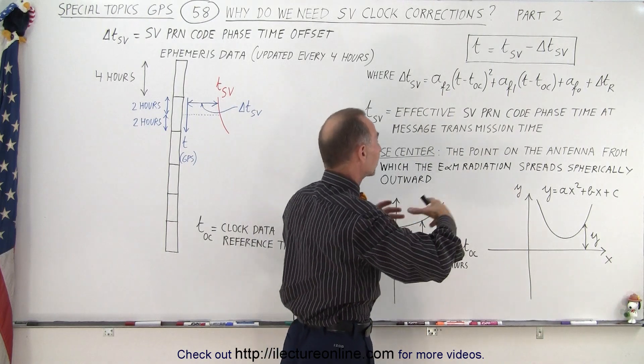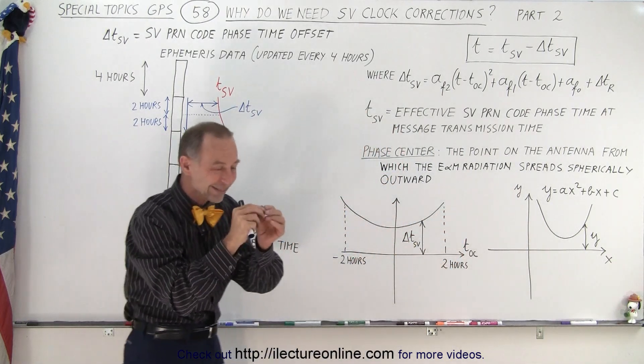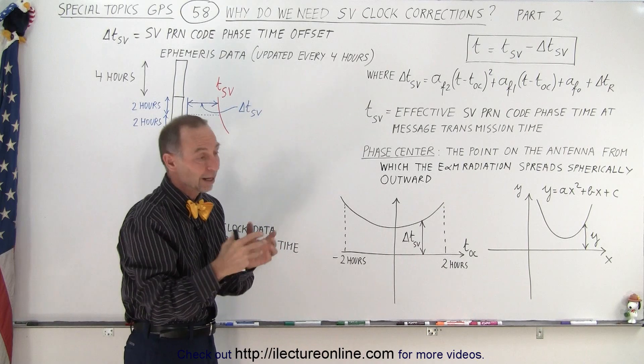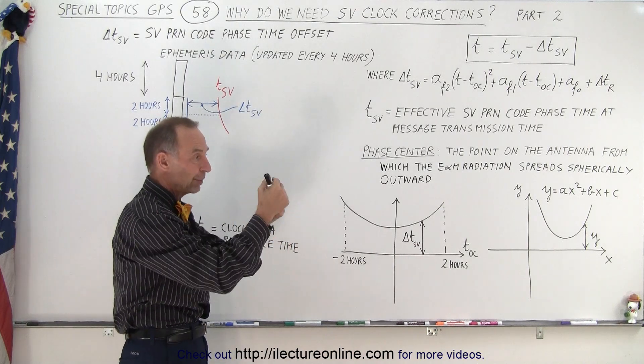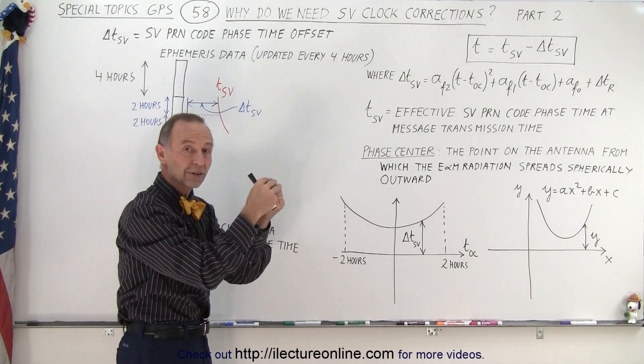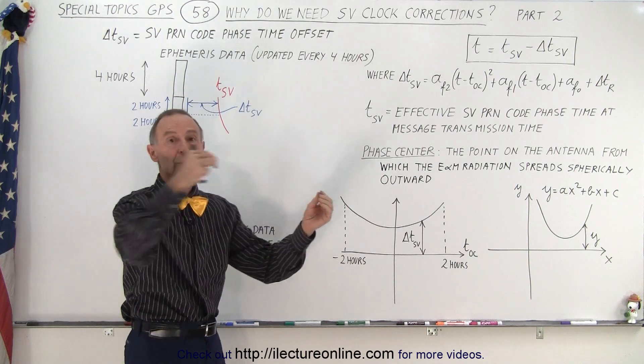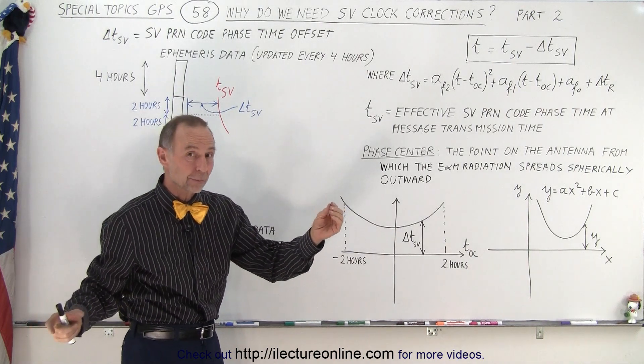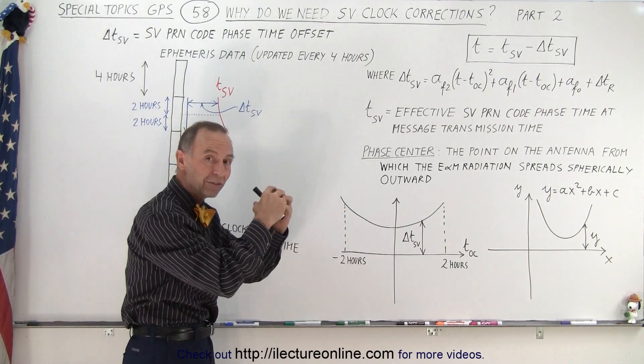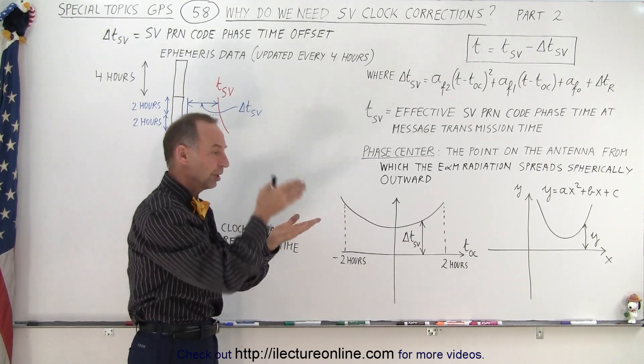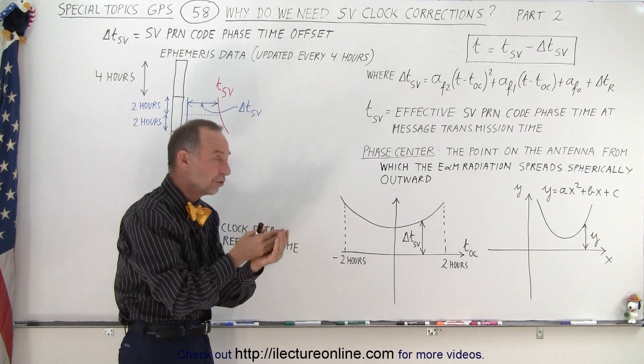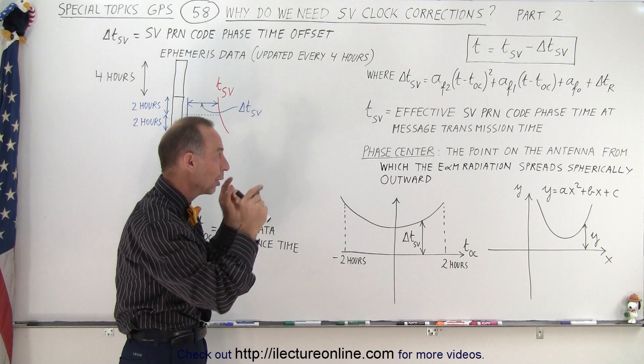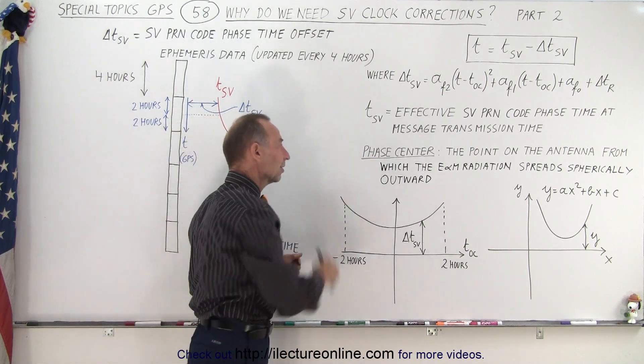Not just from the antenna, but from the phase center of the antenna, which is the point on the antenna from which the EM radiation spreads spherically outward. So it's a very exact position on the antenna. Obviously any errors from the starting point of the message on the satellite will of course also give you that same error when it gets to the ground, so we want to minimize the error of the transmission time sync.